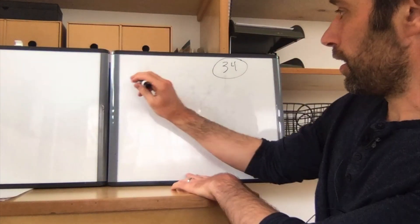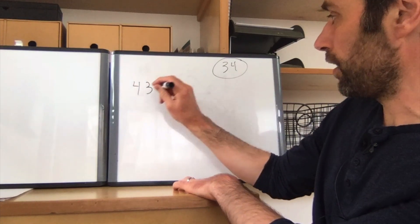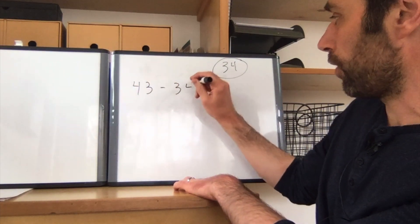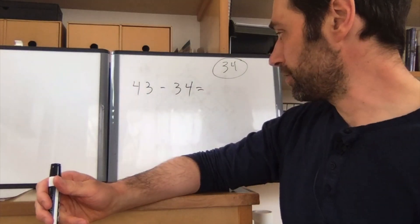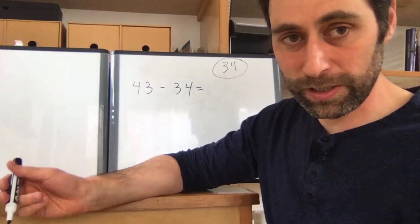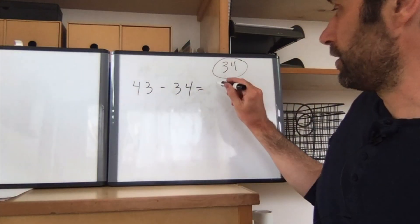So I'll do the big one first. 43 minus 34. And that equals, well actually, 44 minus 34 would be 10. So 43 minus 34 is 9.